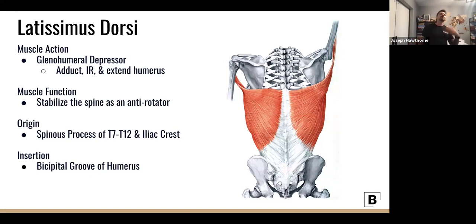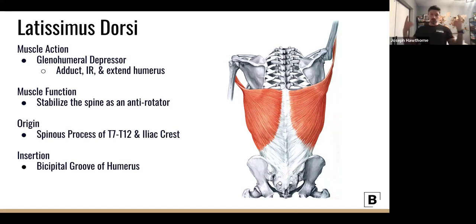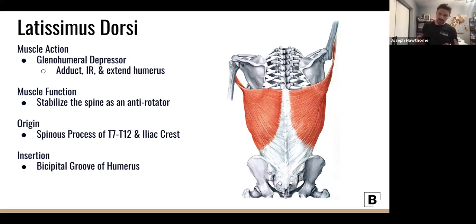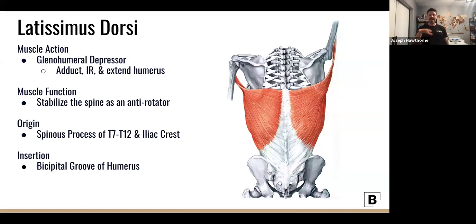Think about the rib cage and shoulder position: if someone can only raise their arm to a limited height, putting them on a vertical lat pulldown machine forces an inefficient position — they'll end up doing more of a tricep pushdown than a lat exercise. For someone with a narrow rib cage or rounded shoulders living in kyphosis, have them lean back on the lat pulldown. The seat stabilizes them, so they don't need glutes or psoas for stabilization.